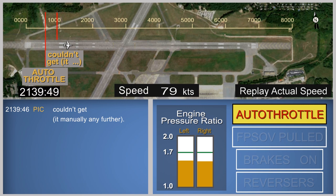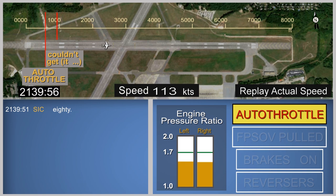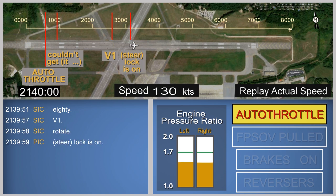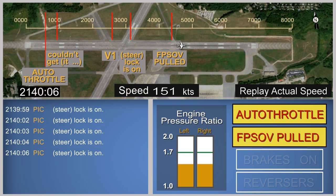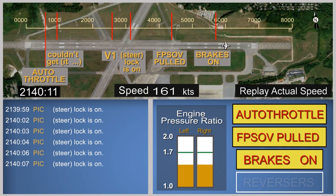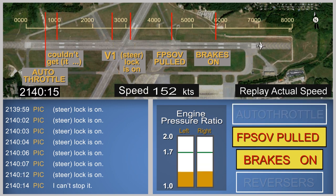The second in command called out that the airplane had reached a speed of 80 knots, then stated the airplane had reached takeoff decision speed, V1. One of the pilots activated the flight power shutoff valve, likely in an attempt to release the gust lock. Brake pressure started to rise, and the thrust reversers were deployed.